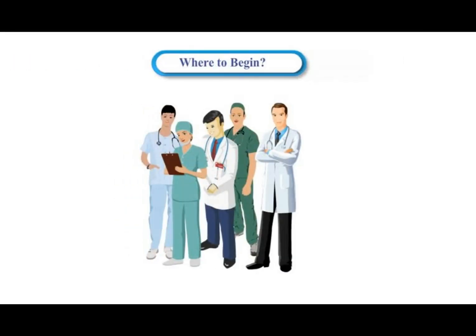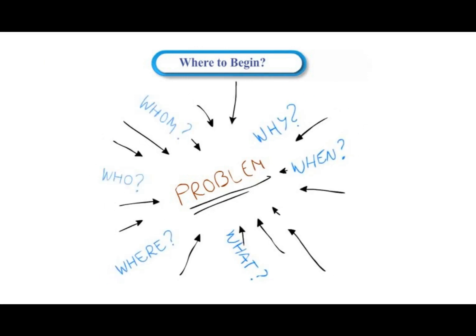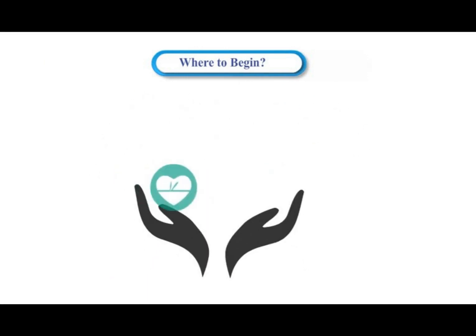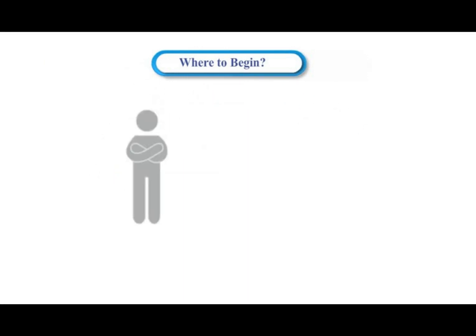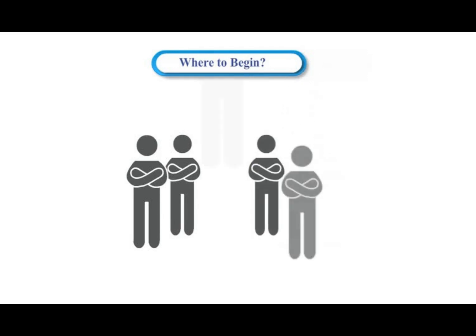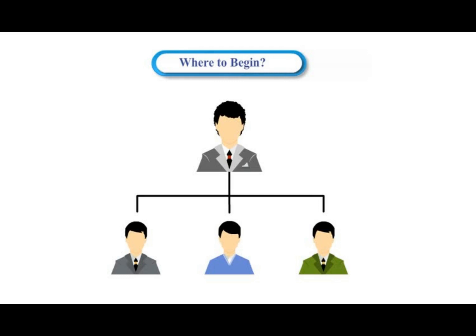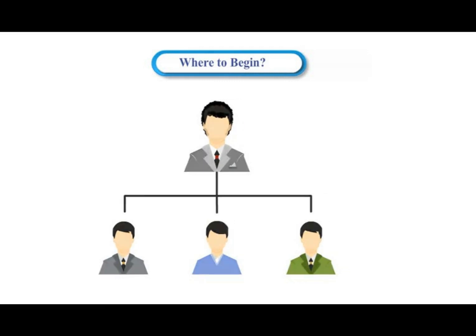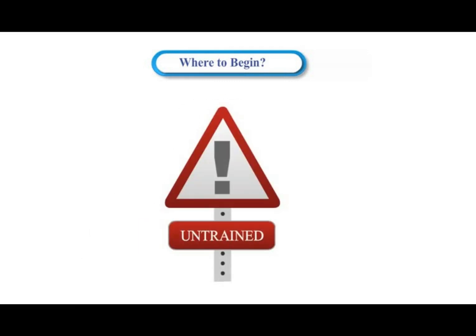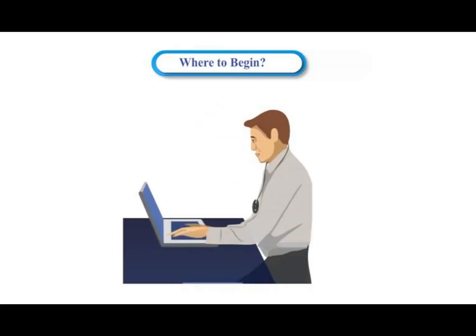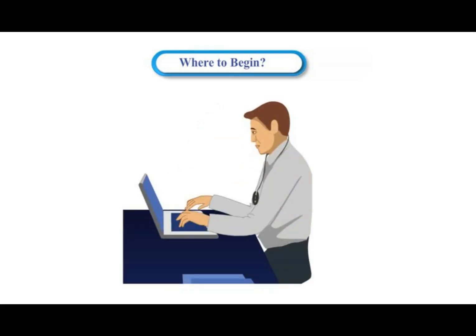Where to begin? Healthcare staff can list the types of problems they face daily in providing patient care. Often they do not believe that they have the accountability or power to do anything about it. In many organizations, staff members have not been trained in quality improvement approaches used to investigate and solve problems.